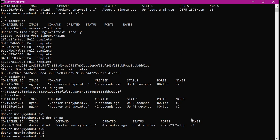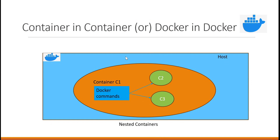This way we can create multiple containers within another container using the Docker image with tag dind — dind means Docker-in-Docker. This image has all the utilities and libraries required to create containers inside a container. In this video, we have seen how to create multiple containers inside another container using the Docker image with tag dind. We will see the practical application of this in the next video by explaining how to create Jenkins master within a Docker container. I hope this video helps. Thanks a lot for watching.